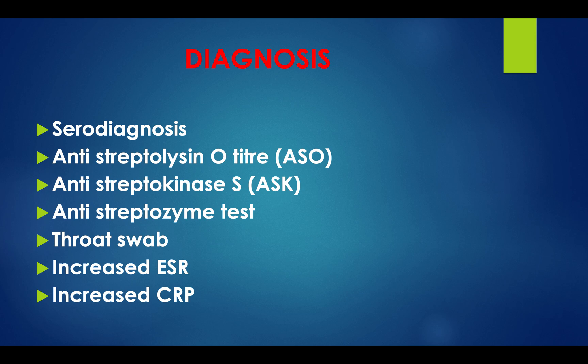Diagnosis: serodiagnosis includes antistreptolysin O titer (ASO titer), anti-streptokinase, and the antistreptozyme test. A throat swab is also performed. Increased ESR and increased CRP are also diagnostic indicators.